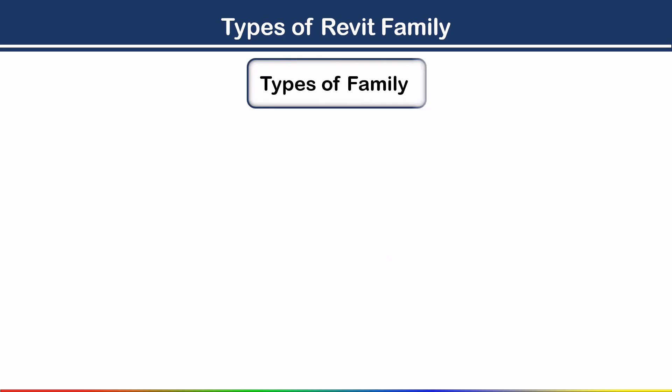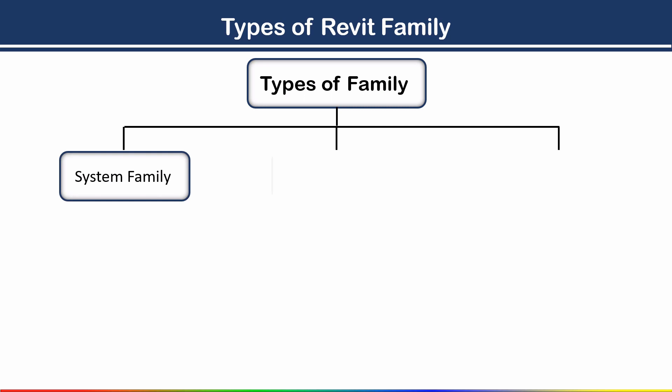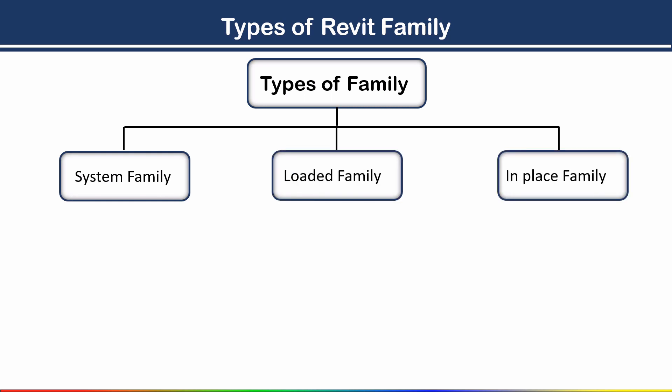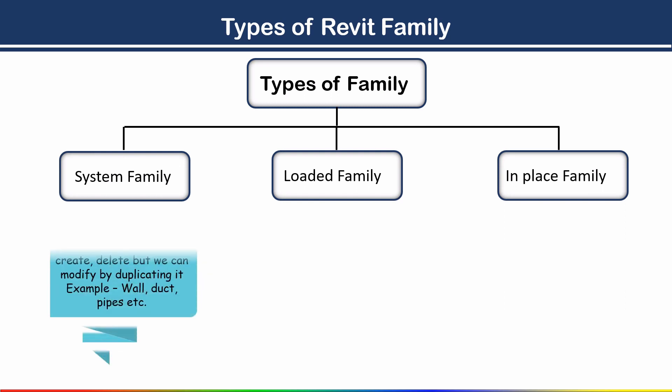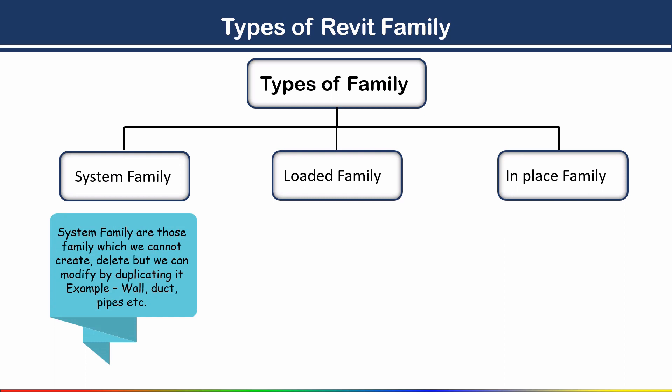Now let's look at the types of Revit families. There are three types: first, system family; second, loaded family; and third, in-place family. We will discuss each one by one.